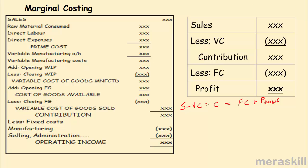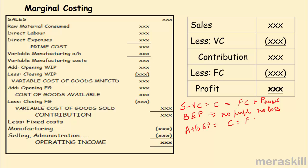When doing marginal costing, there is another important concept: the break-even point. That is the point where you have no profit and no loss. For zero profit, contribution and fixed cost must be equal — so at break-even point, contribution equals fixed cost. The only difference in the cost sheet is that fixed manufacturing overheads do not appear in cost of goods manufactured; they come in as a period cost.